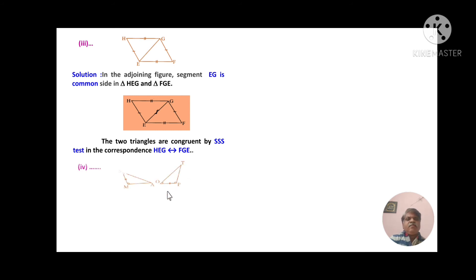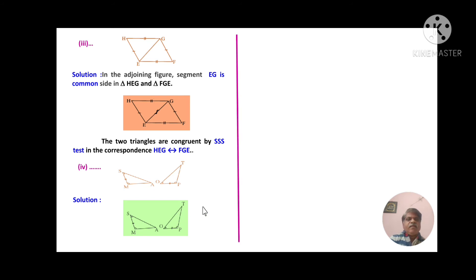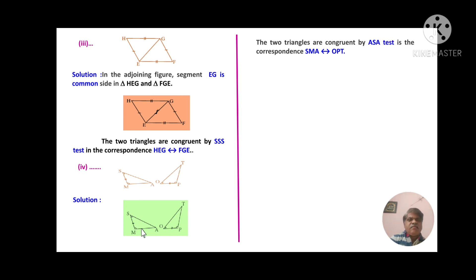Problem number four: the two triangles are congruent by the angle-side-angle (ASA) test, and the correspondence is SMA to OPT.